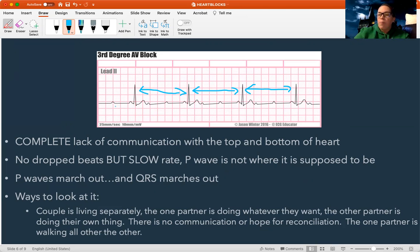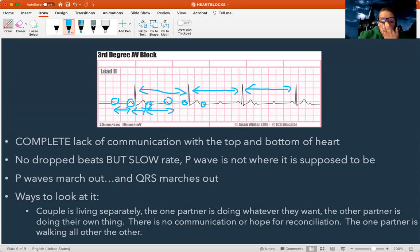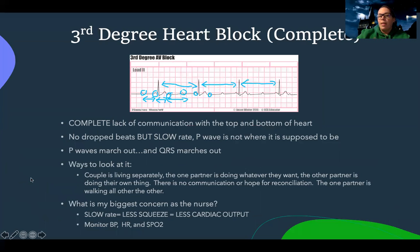And look at all these P waves — there are P waves everywhere. They're all the same distance from each other because the P waves are doing their own thing, and the QRS complexes are doing their own thing. The P waves march out and the QRS complexes march out independently. The heart is in complete block — it's going to be very slow with less cardiac output, and there will usually be signs of very poor perfusion.